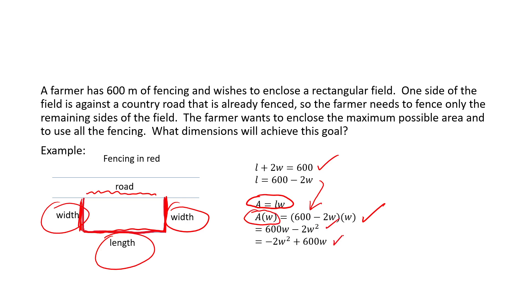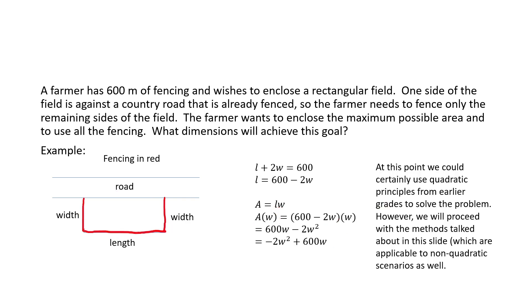After simplifying, we see that's the same as negative 2W squared plus 600W. At this point, we recognize we could use quadratic principles to solve the problem, but let's proceed with the method that we've been talking about in previous lessons, which actually allows us to use them in non-quadratic scenarios as well.